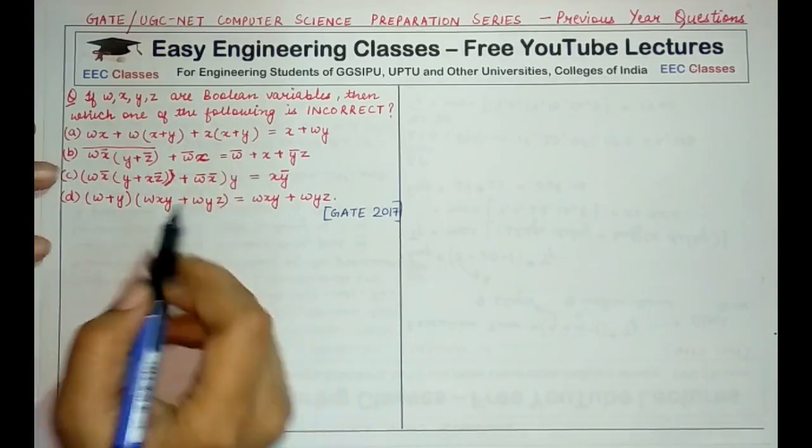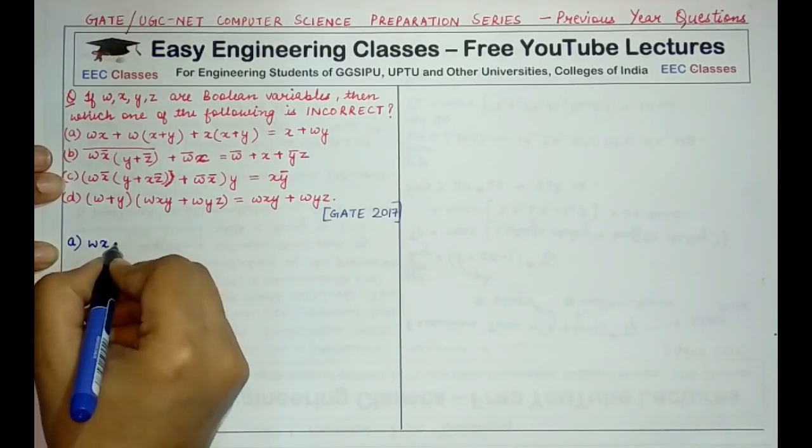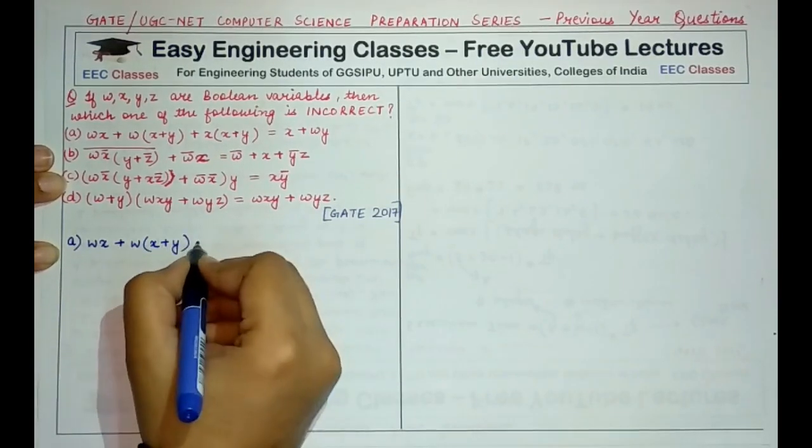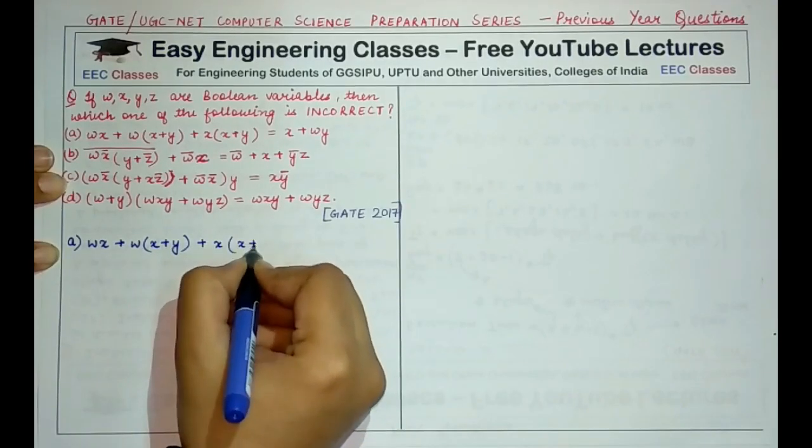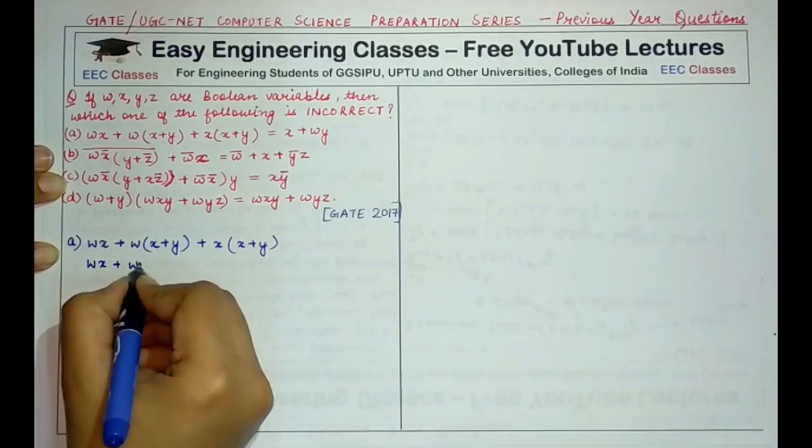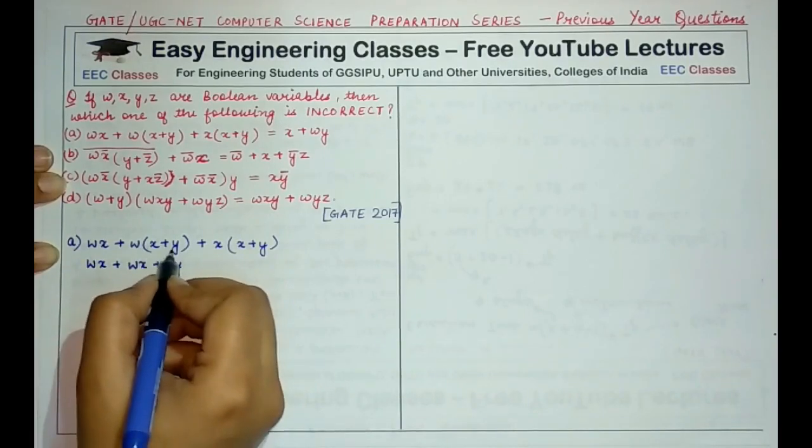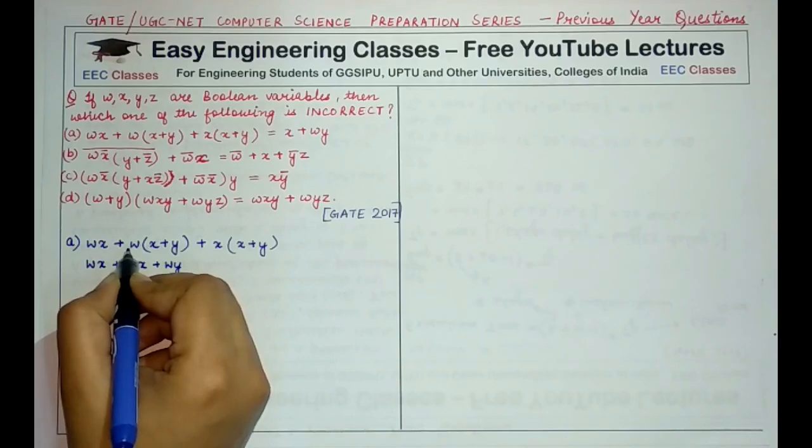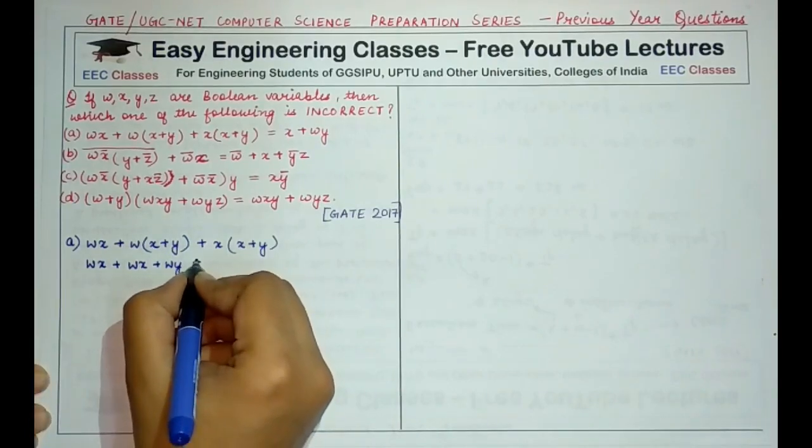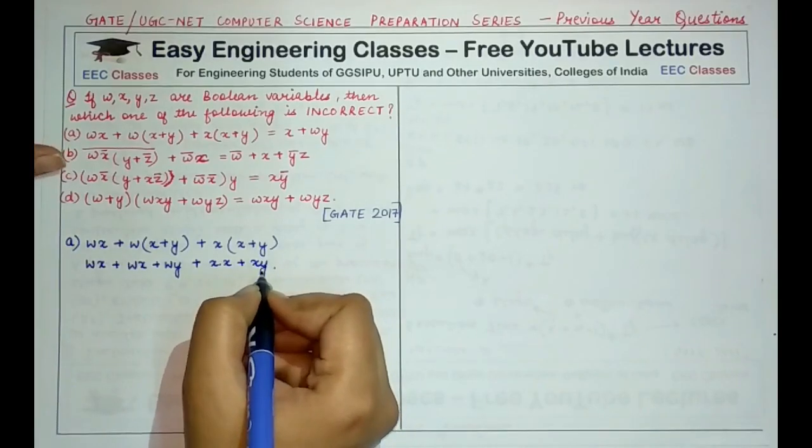So we'll start with option A. Let's write down what is option A, the left hand side: WX plus W multiplied by X plus Y plus X into X plus Y. So if we expand this, what we will get? We would get WX plus WX plus WY, I'm just applying the distributive law or multiplying W with all the variables inside the bracket, plus X into X plus X into Y.